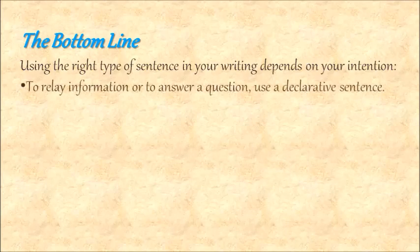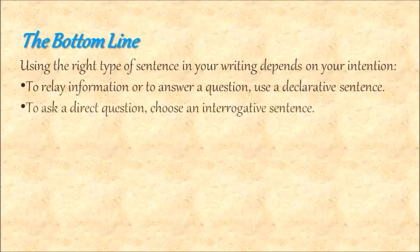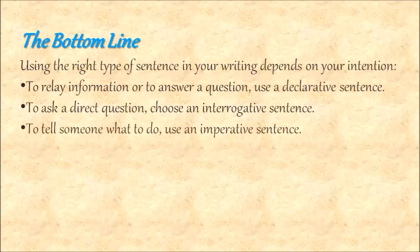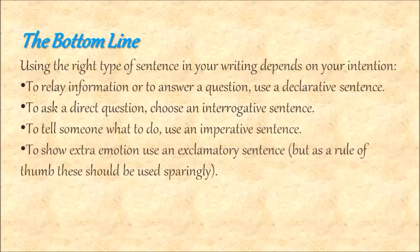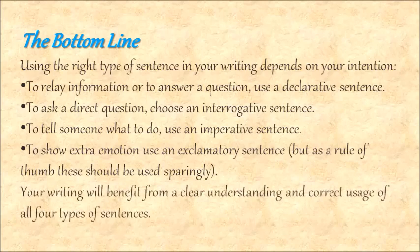To relay information or answer a question, use a declarative sentence. To ask a direct question, choose an interrogative sentence. To tell someone what to do, use an imperative sentence. To show extra emotion, use an exclamatory sentence — but as a rule of thumb, these should be used sparingly. Your writing will benefit from a clear understanding and correct usage of all four types of sentences.